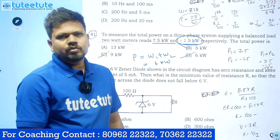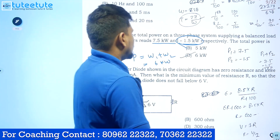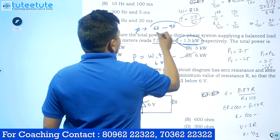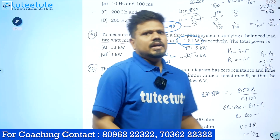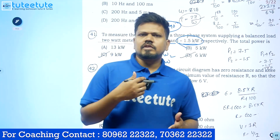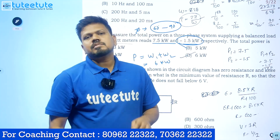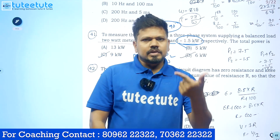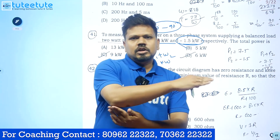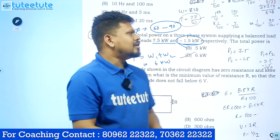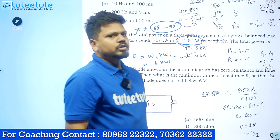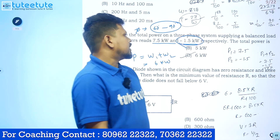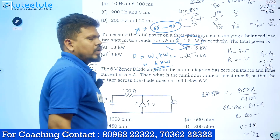Generally a watt meter will not read negative. Whenever the power factor angle phi is between 60 degrees to 90 degrees, the second watt meter reading will be negative. At that time it wants to deflect in the negative direction, but that's not possible, so we have to reverse the potential coil terminals. When reversed it gives a positive deflection, but we note the reading as minus 1.5 kilowatt. So the answer for this question is 6 kilowatts.